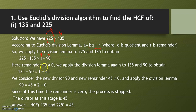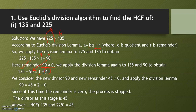Since the remainder 90 is not equal to zero, we again apply the division lemma to 135 and 90. So 135 becomes the dividend and 90 becomes the divisor. When you divide 135 by 90, you get the quotient as 1 and the remainder as 45.